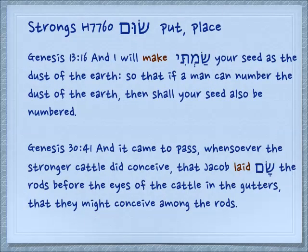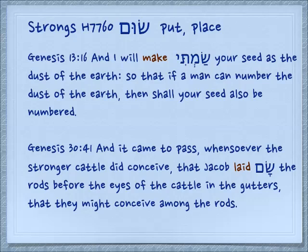When we're looking in the past tense, we don't really have any problem. Genesis 13:16: And I will make — sumti — it conjugates just like any normal hollow verb — your seed as the dust of the earth, so that if a man can number the dust of the earth, then shall your seed also be numbered. The third person masculine singular appears in Genesis 30:41: And it came to pass, whensoever the stronger cattle did conceive, that Jacob laid — he put in place — the rods before the eyes of the cattle in the gutters, that they might conceive among the rods.